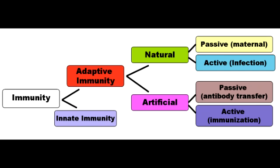The means of acquisition of passive immunity is to receive preformed antibodies. The onset of passive immunity is rapid, and the duration is short — it has a half-life of about three weeks.